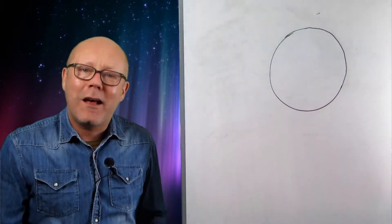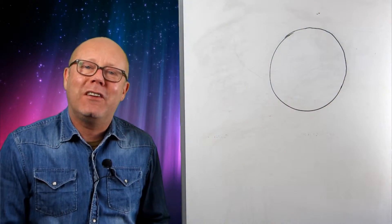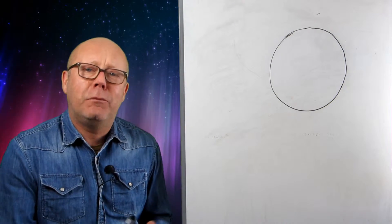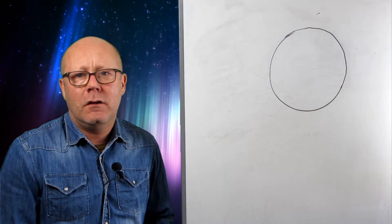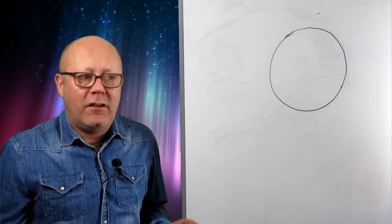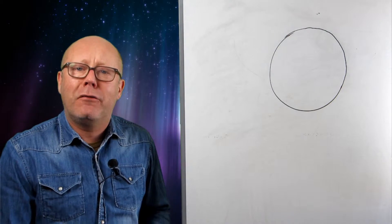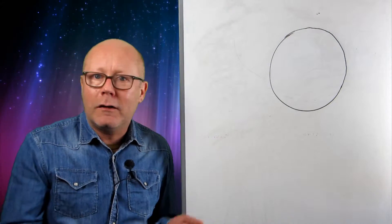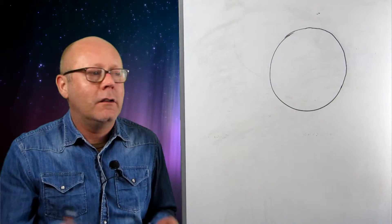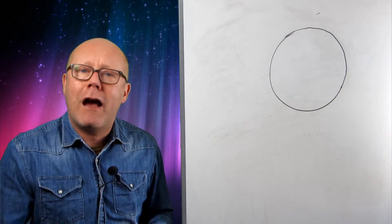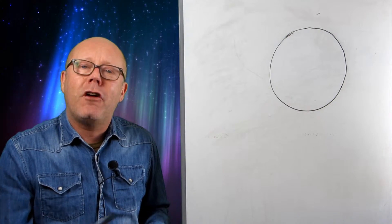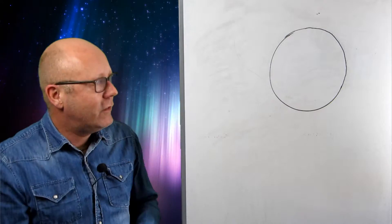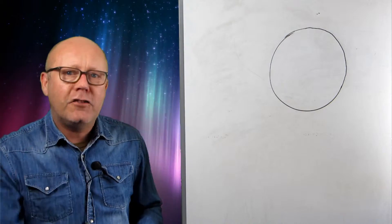Hi, welcome to IB Physics Made Easy. Circular motion is a very specific type of motion. It is involved in many areas of physics which are part of your curriculum, like particle physics, mechanics, gravity, and even charges in motion in a magnetic field. So let's check this out.